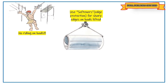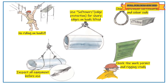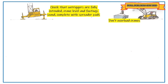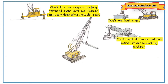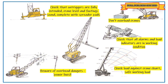Safe lifting instructions: no riding on loads. Use softness (edge protection) for sharp edges of lifted loads. Check equipment certification and color code. Check the work permit and rigging. Inspect all equipment before use. Check that load triggers are fully extended and crane levels and footing are sound, using spreader pads as required. Do not overload cranes. Check all alarms and load indicators are working. Check the load against the crane chart safe working load. Be aware of overhead dangers such as power lines. Park cranes and vehicles safely.